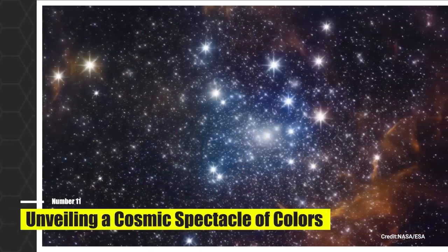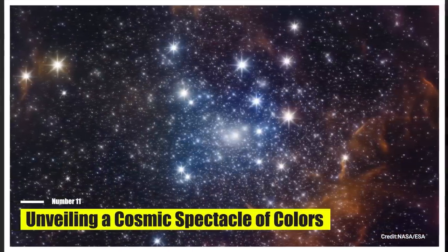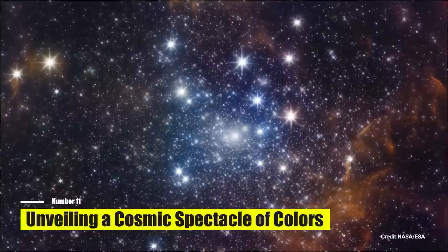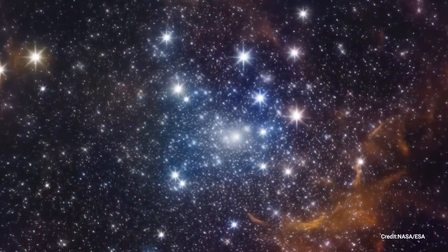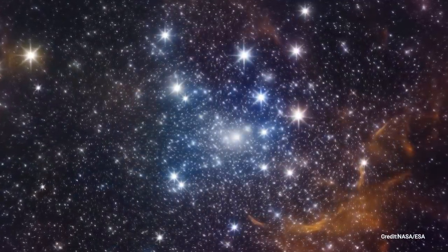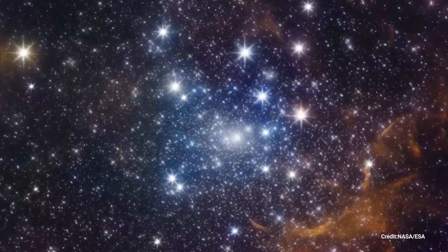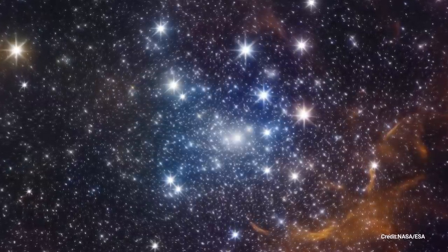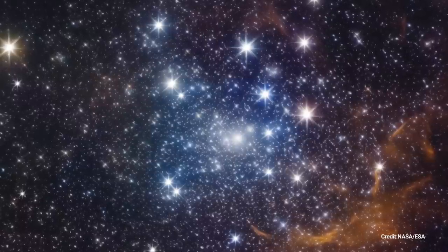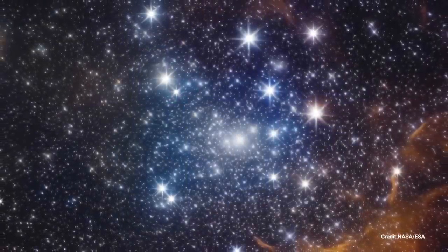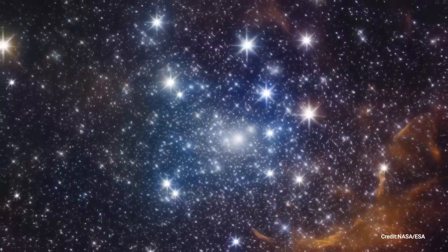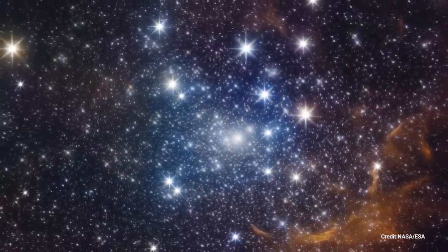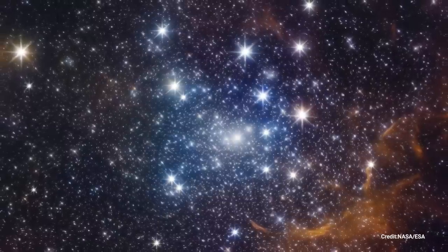Number 11. Unveiling a cosmic spectacle of colors. Star clusters are among the most visually stunning and astrophysically intriguing objects in our night sky. Nestled near the Southern Cross, deep in the Southern Celestial Hemisphere, there lies an especially spectacular one, known as the Kappa Crucis Cluster, but more famously recognized as NGC 4755 or the Jewel Box. This star cluster is visible to the naked eye, presenting a spectacle of celestial brightness. Its charming nickname was bestowed by the English astronomer John Herschel, who, around 1830, compared the cluster's vibrant colors to an array of exotic jewels.